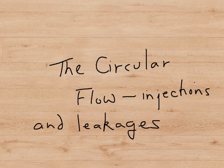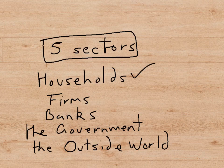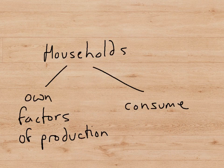This presentation is going to look at the diagram we use to describe the whole economy, which is called the circular flow with injections and leakages. We identify five major groups in the economy: households, firms, banks, the government, and the outside world. Let's look individually at what each of these sectors or groups in the economy actually does.